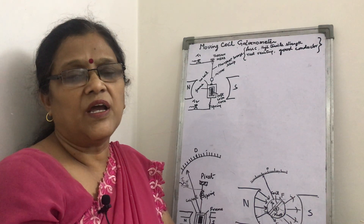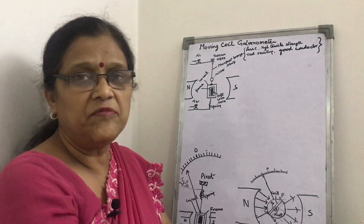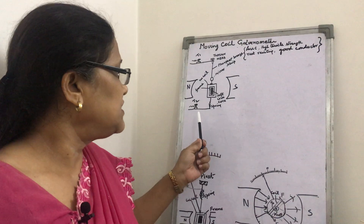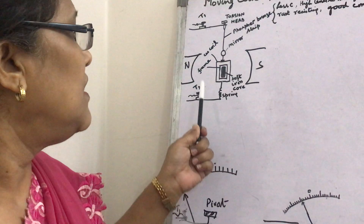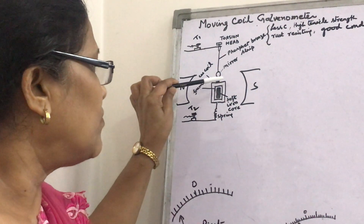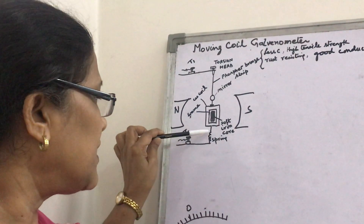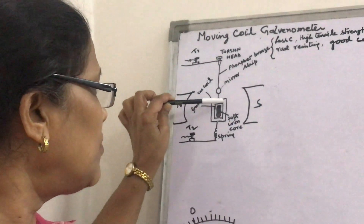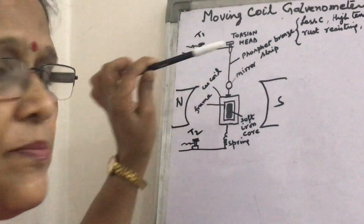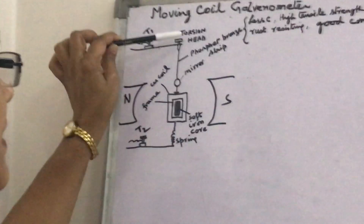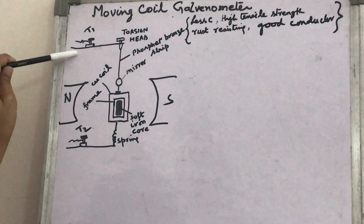There are two types of galvanometer. First, the suspended coil galvanometer: a coil is wound on an aluminium frame. One end of the copper coil is connected with a loosely wound spring through connecting screw T2. The other end is connected with a mirror, and the total coil is suspended by a long thin phosphor bronze strip, whose upper end is connected with a torsion head and screw T1.